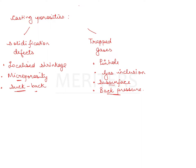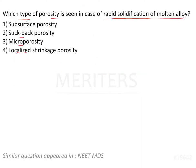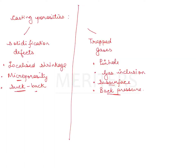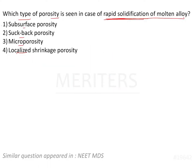Now we'll tell you how to easily eliminate these options. The question talks about rapid solidification, so it has to be either localized shrinkage, microporosity, or suck back porosity. The option that can be eliminated is subsurface porosity.